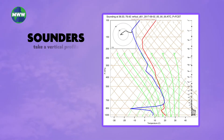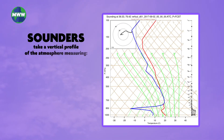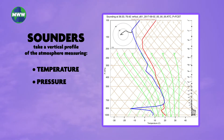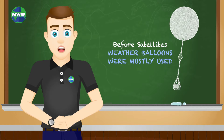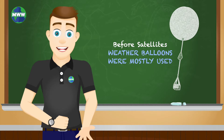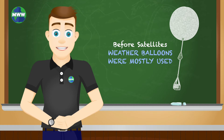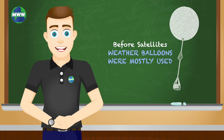Sounders take a vertical profile of the atmosphere measuring temperature, pressure, water vapor, and other data. This information usually is displayed on a skew-T. Before satellites, this type of information was mostly obtained through weather balloon launches.